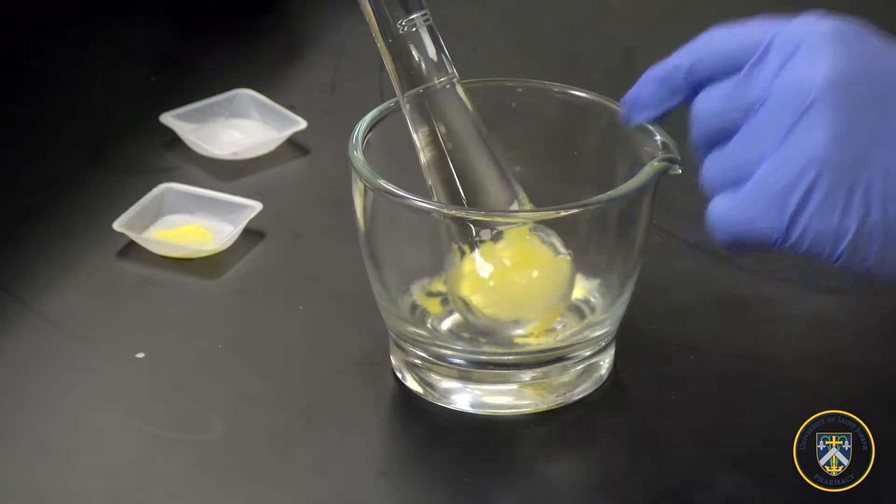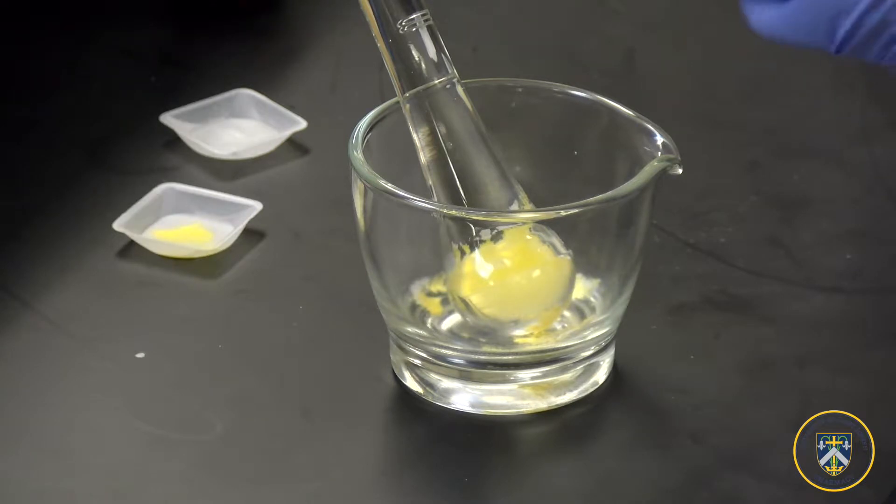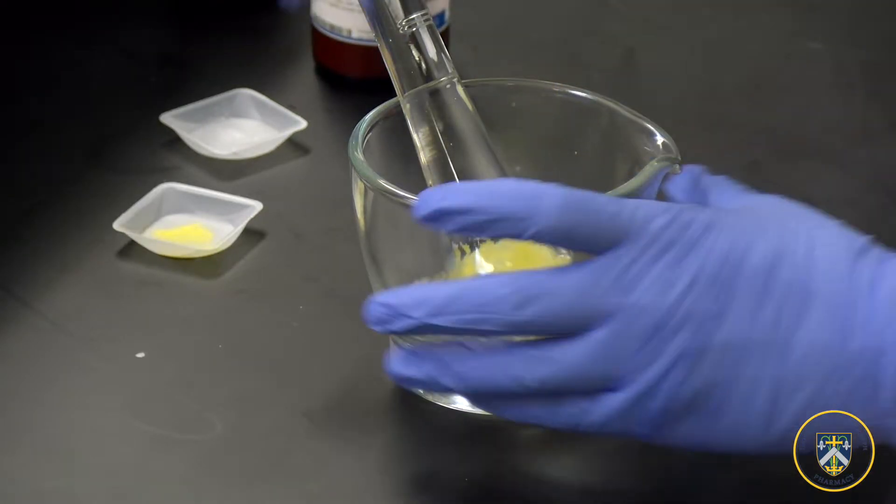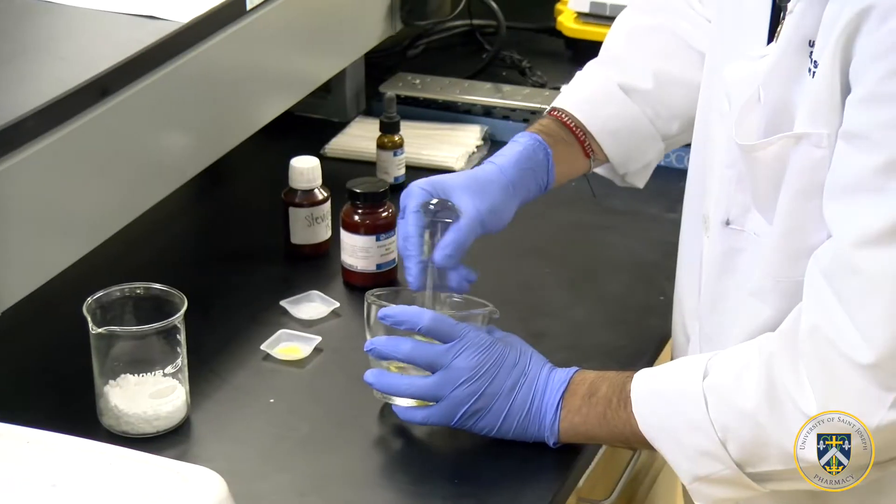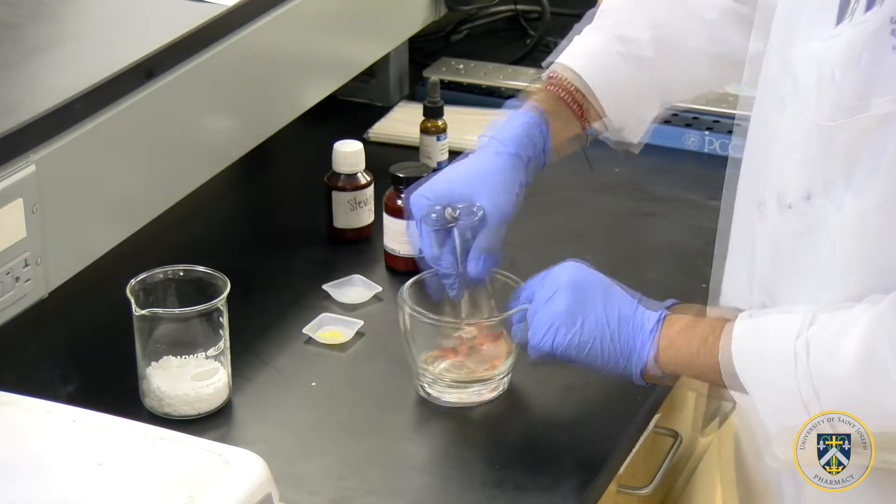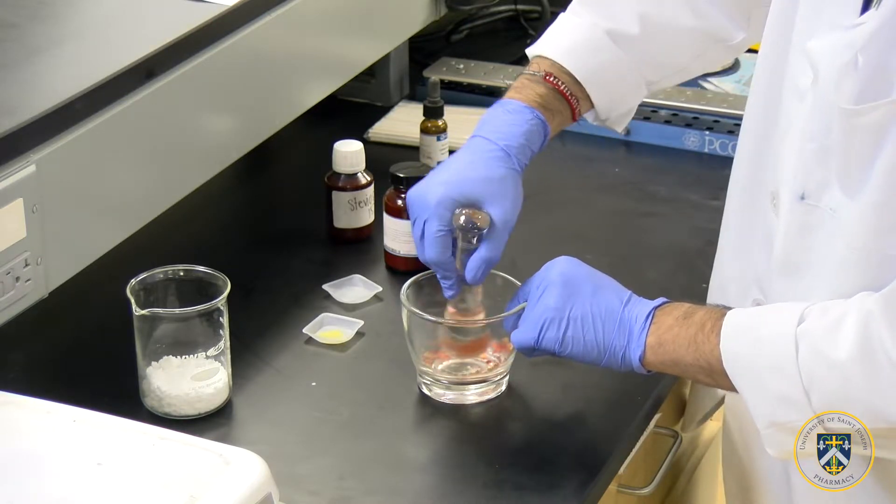At this point you can also add a little bit of food coloring. I'll be adding red food coloring. Mix until all the powders are distributed evenly.